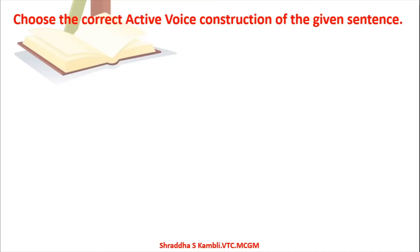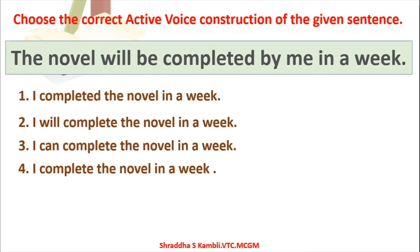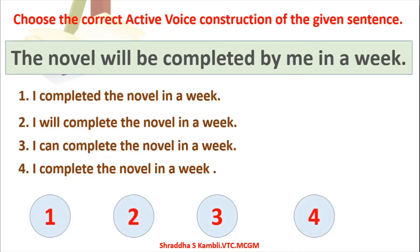Next example: 'The novel will be completed by me in a week.' This is future tense — something going to happen in the future. The options are: (1) I completed the novel in a week, (2) I will complete the novel in a week, (3) I can complete the novel in a week, (4) I complete the novel in a week. Since we must not change the tense, the answer is: 'I will complete the novel in a week.'